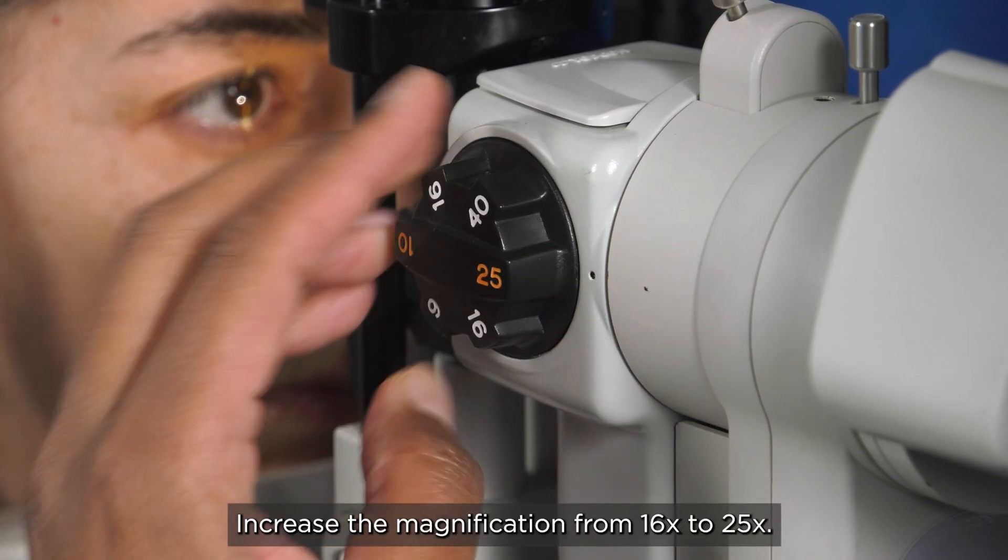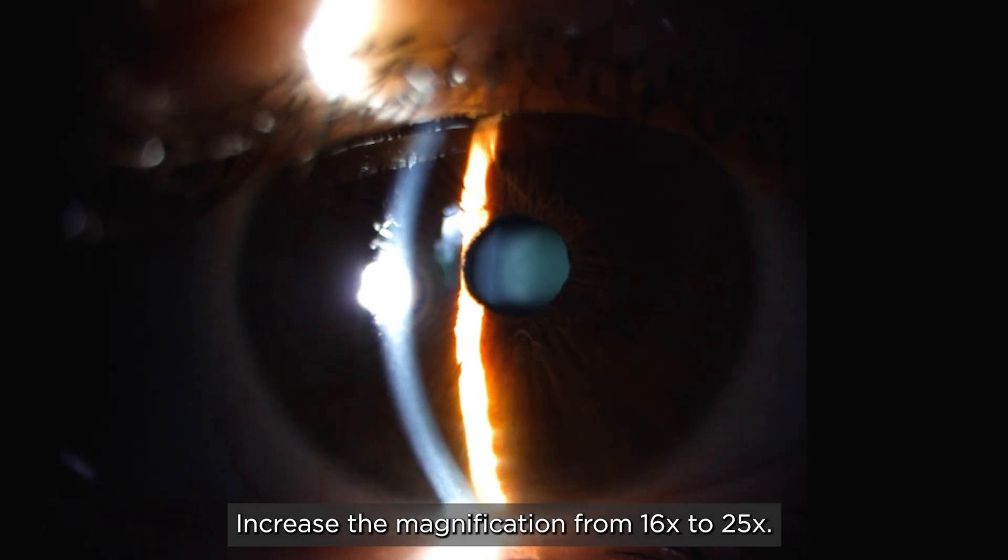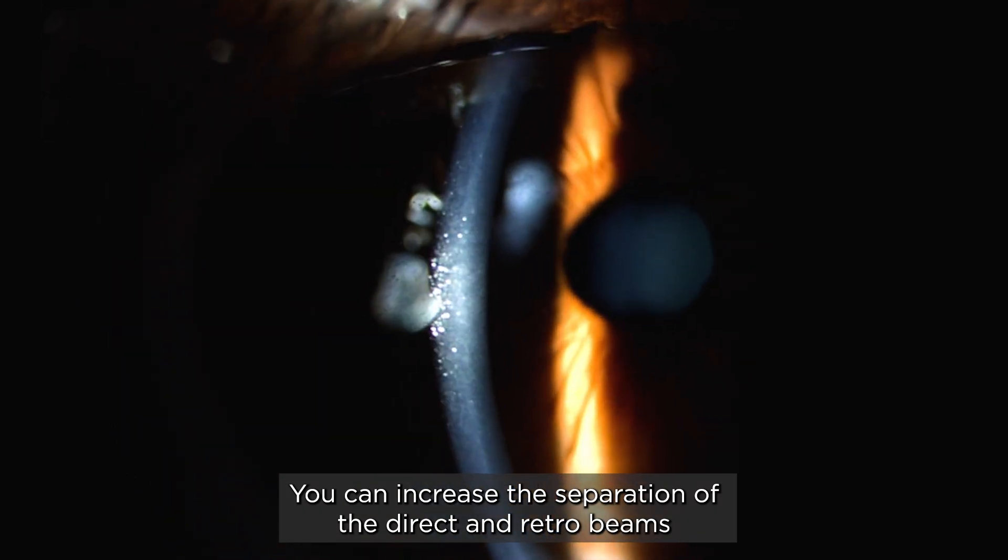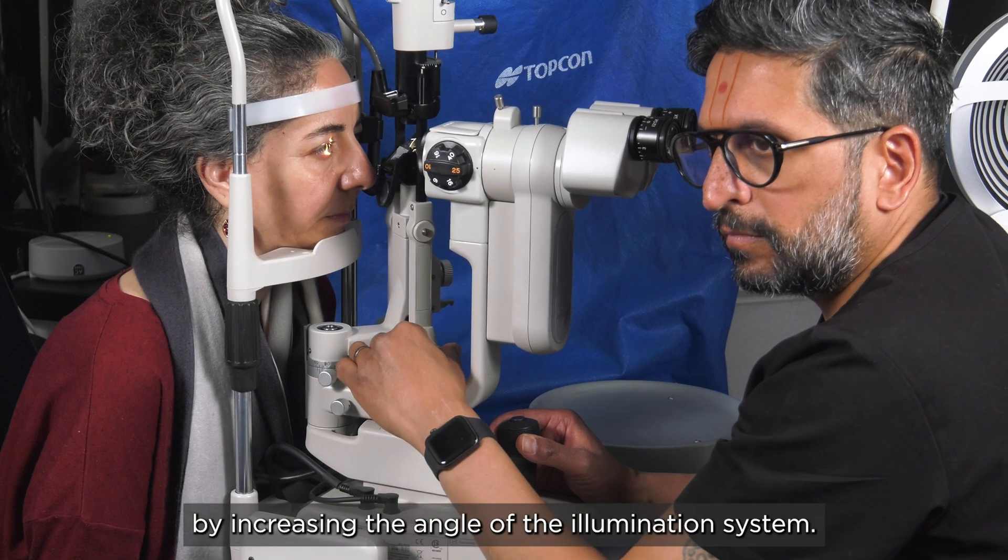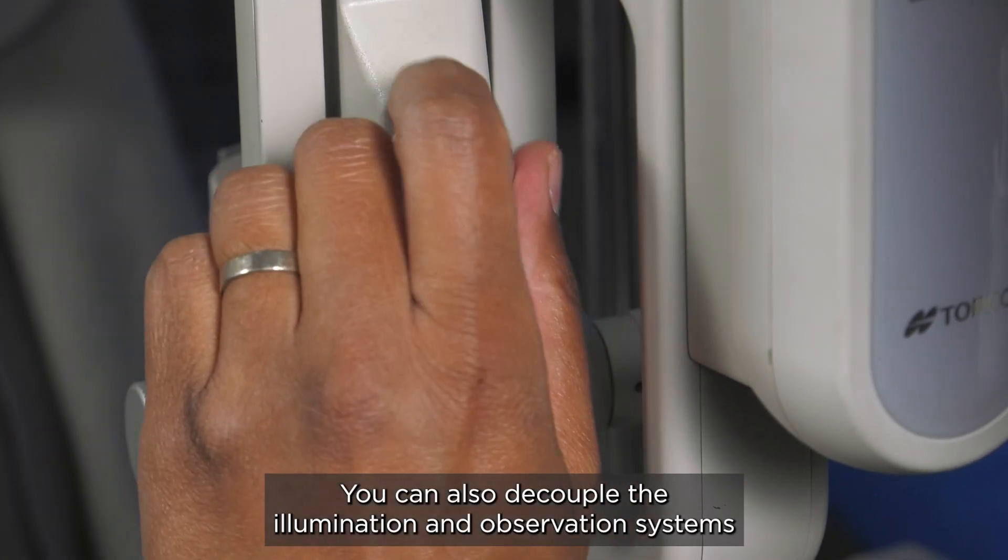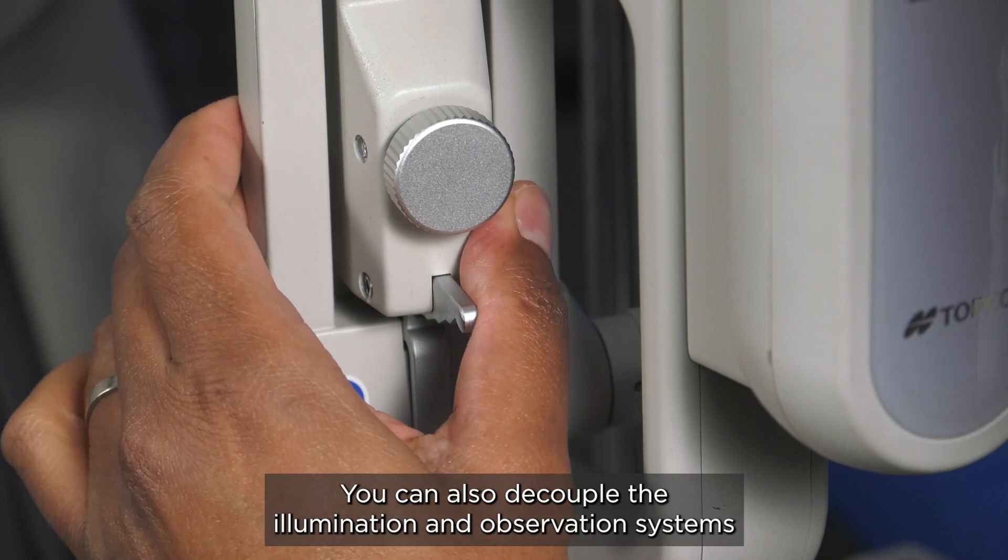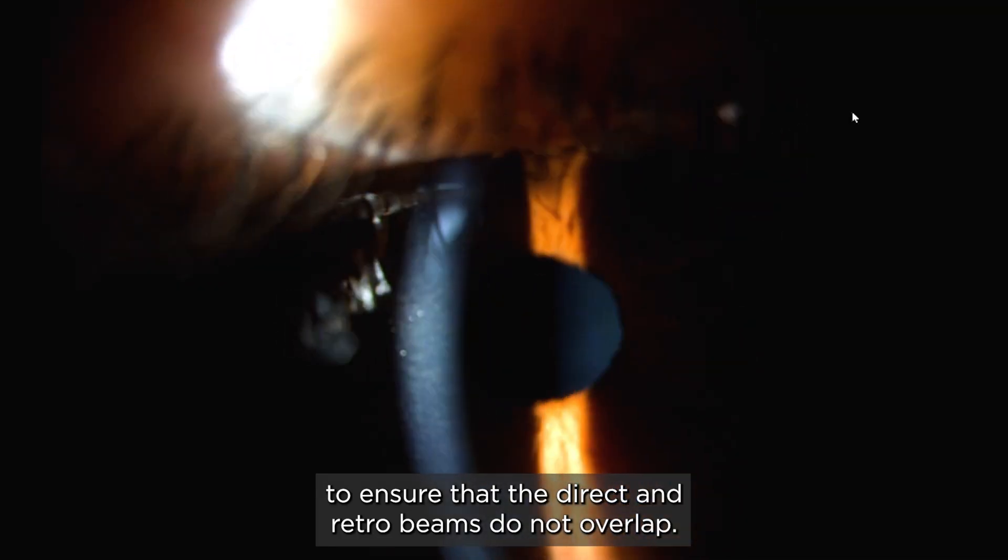Increase the magnification from 16 times to 25 times. You can increase the separation of the direct and retro beams by increasing the angle of the illumination system. You can also decouple the illumination and observation systems to ensure that the direct and retro beams do not overlap.